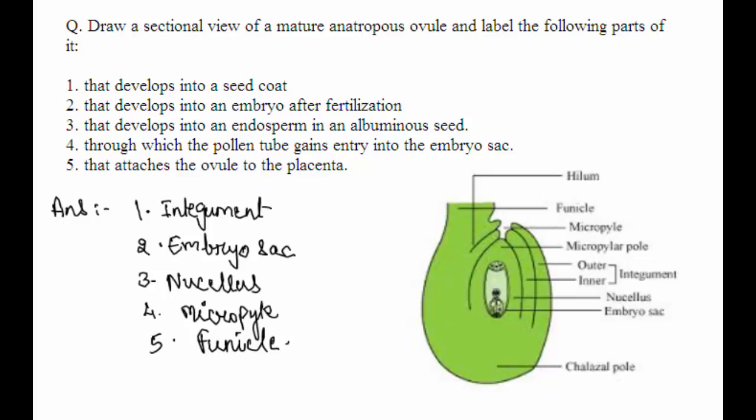So you need to label: integument, embryo sac, nucellus, micropyle, and funicle.